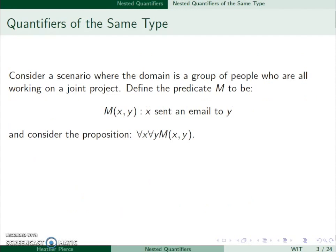Let's consider a scenario where the domain is a group of people who are all working together on a project. We're going to let M(x,y) mean x sent an email to y.